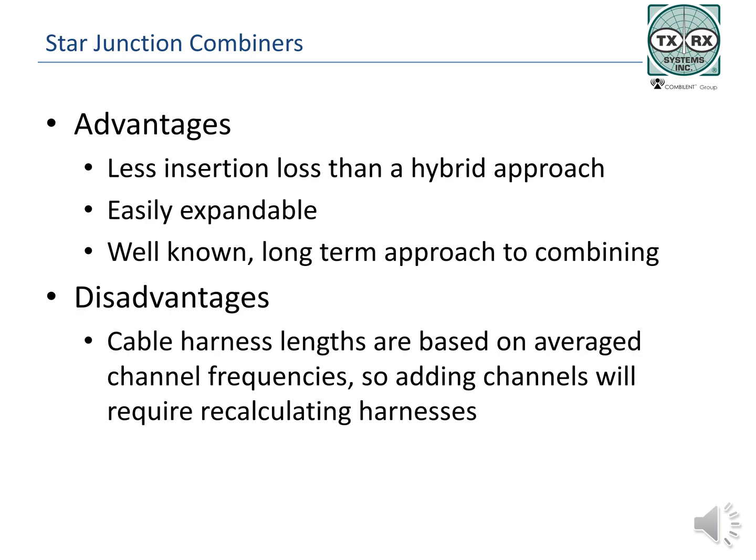Star junction combiners are easily expanded mechanically. If all the ports on the star are used, channels can be added after the junction by using a T or other coupler in the output feed line. Be very careful in expanding a star junction combiner, contacting the manufacturer as all the cables and cavities interact and may reduce the output power if not carefully designed. Care must be exercised when expanding the combiner or in removing or changing channel frequencies. A change in frequency will require cable lengths to be recalculated and should be done by the combiner manufacturer.